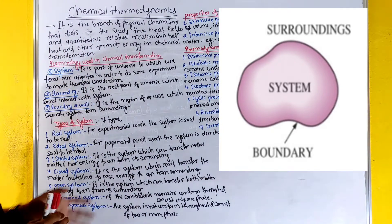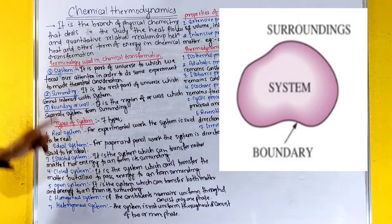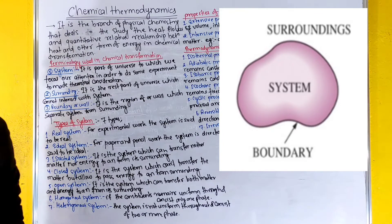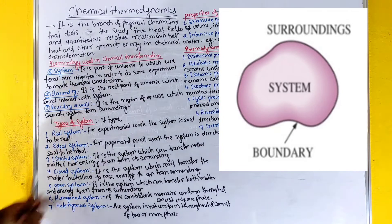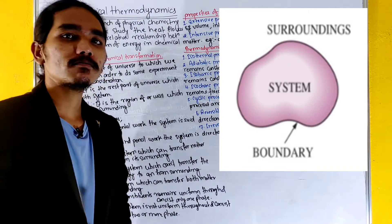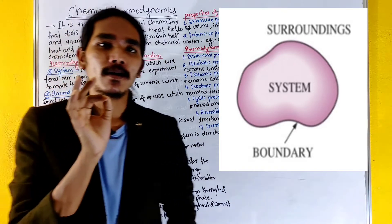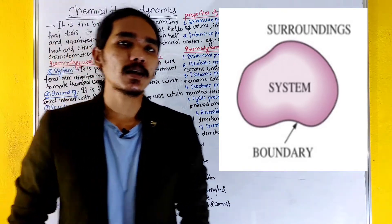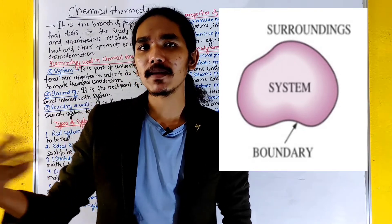A system is the part of the universe to which we focus our attention in order to do some experiment to make theoretical constitution. The surrounding is the rest part of the universe which cannot interact with the system — the system has no meaning outside of interaction with the surrounding.